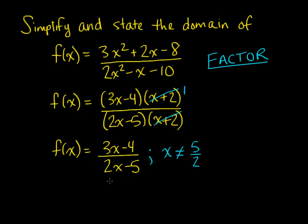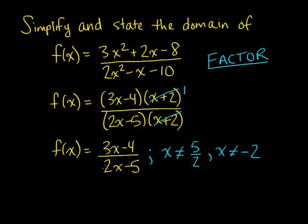That actually isn't the only restriction we need to state. We have to go back through the question and make sure that at any point the denominator could not equal zero. Going back to the previous step, five over two would make the first factor zero — already stated. But if x plus two equals zero, that would also make the whole denominator equal to zero. So we must state that x cannot equal negative two as well, even though we divided it out during simplification. So here is our simplified answer, with both restrictions stated.